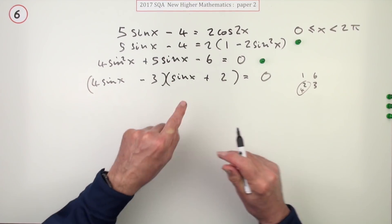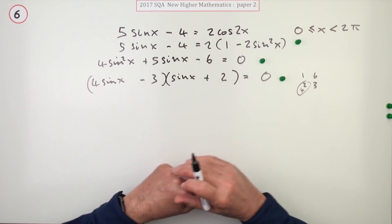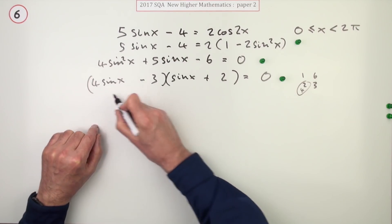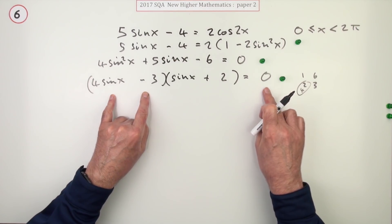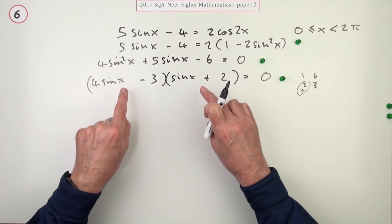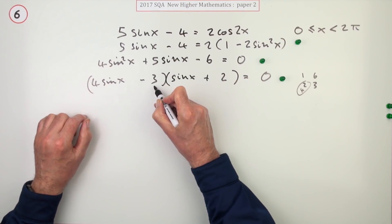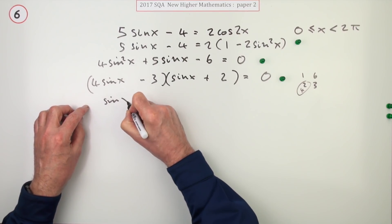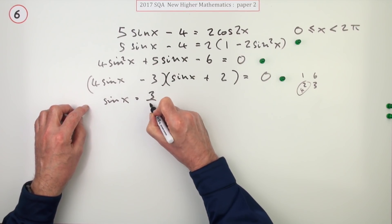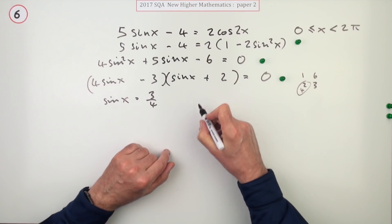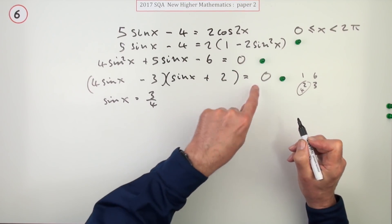Doing the factorization gets the next mark. Right, so what's that product coming to zero means one of them or either of them rather could be zero. So if this is responsible for that zero, sine x would have to be three quarters, just take three over, divide by four. If this is responsible for it coming to zero, then sine x must equal negative two. Doing that gets the next mark.